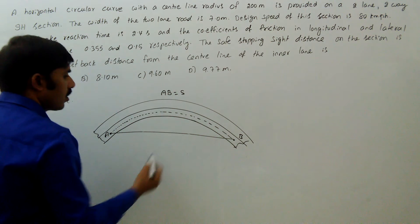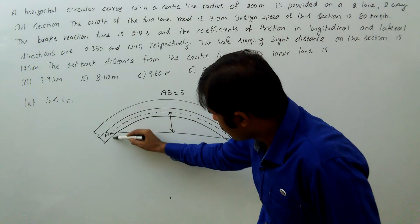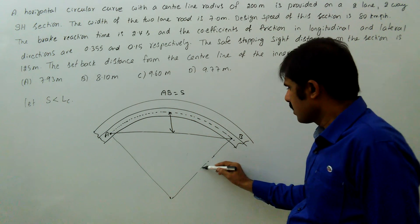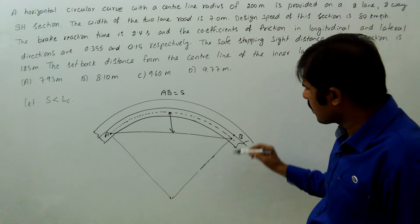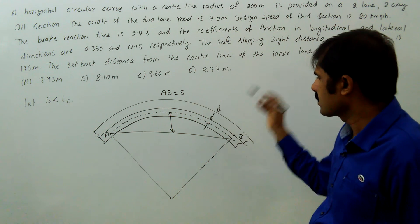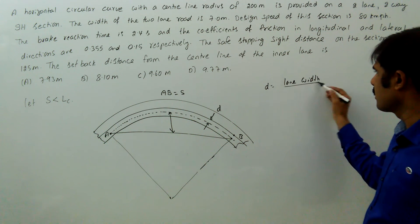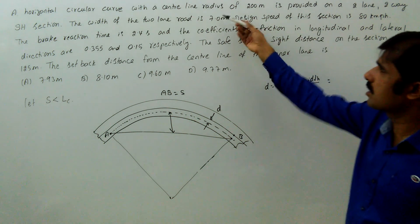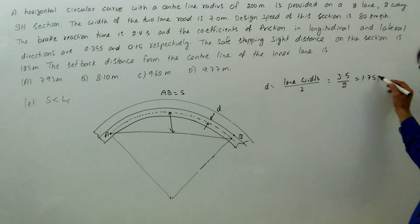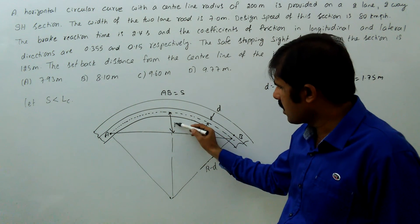The distance from the center of the curve to the center line of the road is R. The distance from the road center line to the center of the inner lane is small d, where d equals lane width divided by 2. With lane width 3.5 m (since 7 m total for 2 lanes), d = 3.5 / 2 = 1.75 m. So the inner lane radius is R minus d, and m is the setback distance.